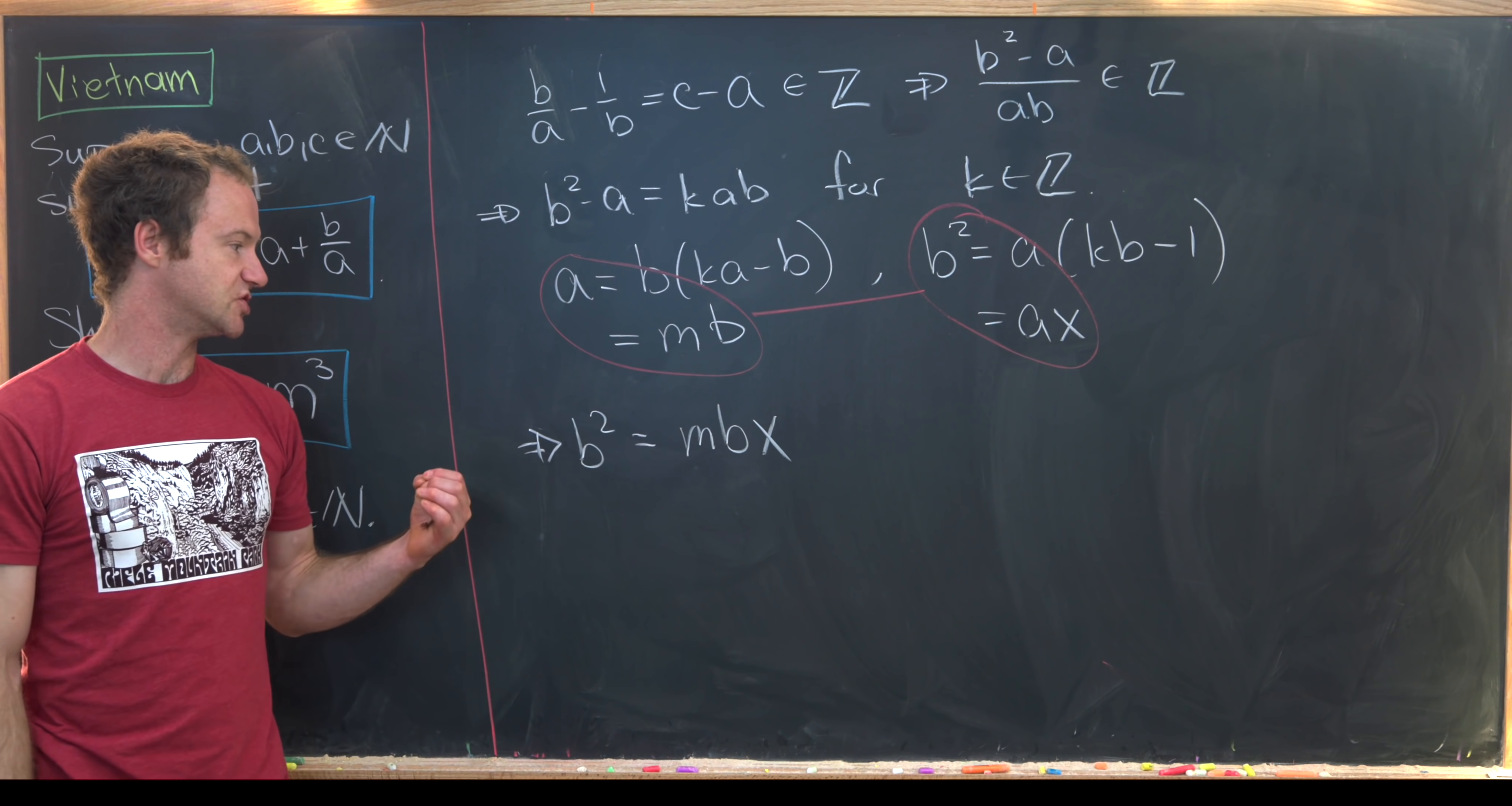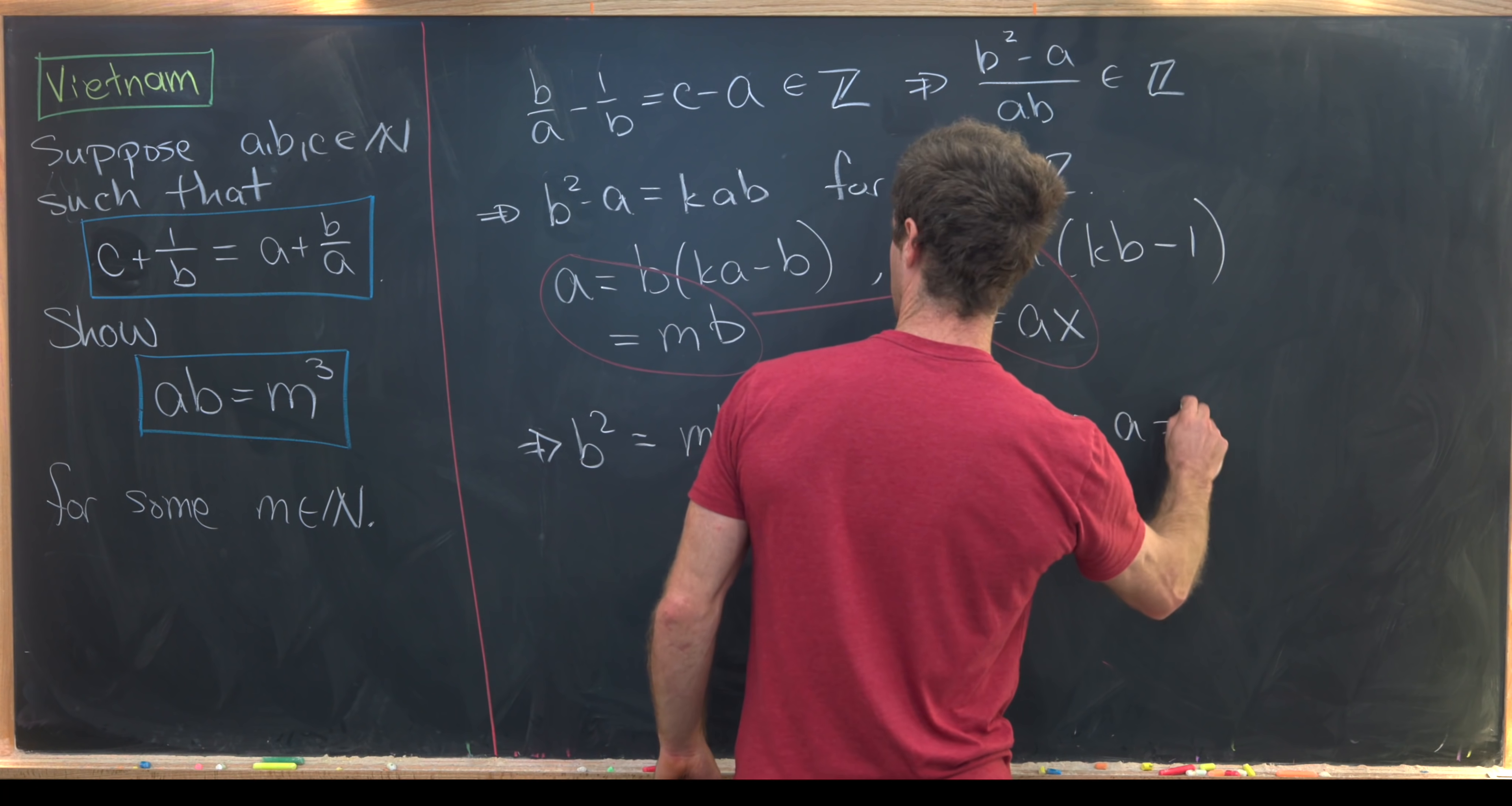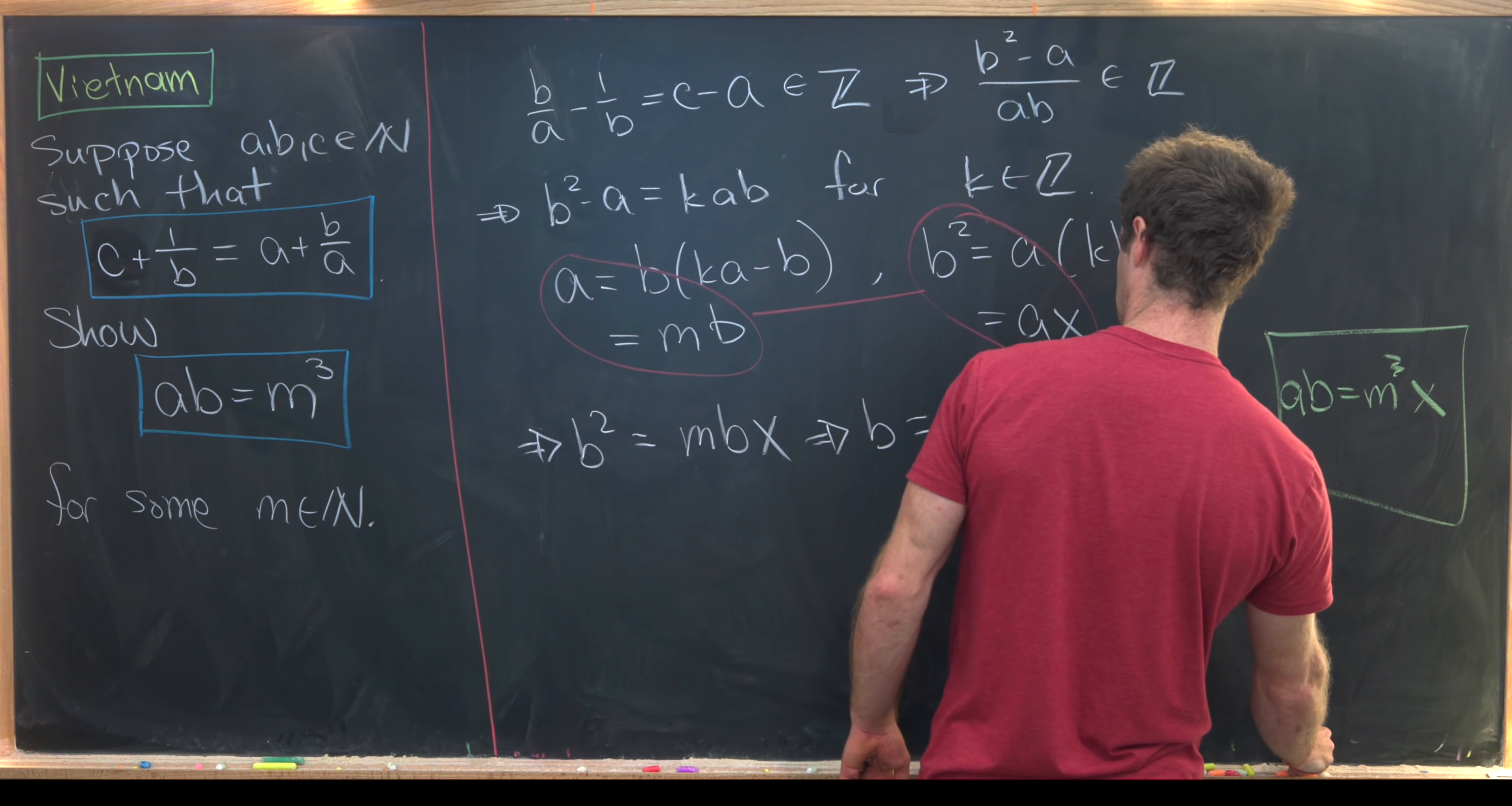But check it out, I can just cancel the B from both sides, and I'm left with B is equal to M times X. But now throwing that back into this equation, I see that that means that A is equal to M squared times X. And just as a little thing to point out really quickly, that means that AB is equal to M cubed times X squared.